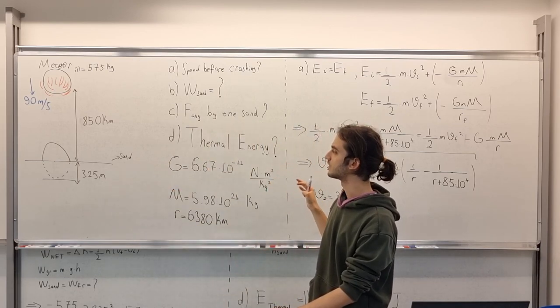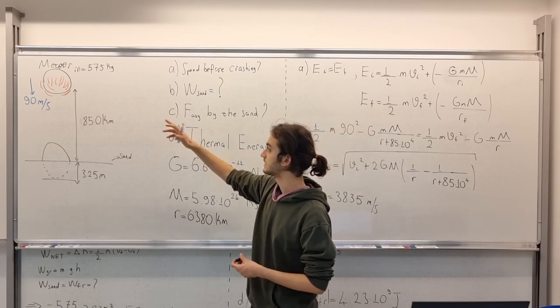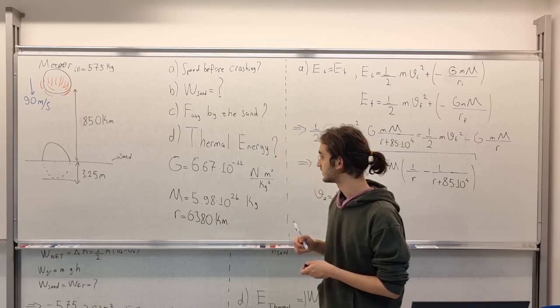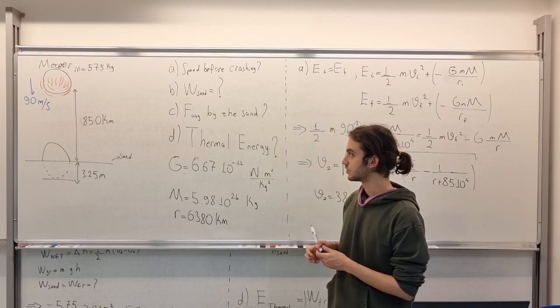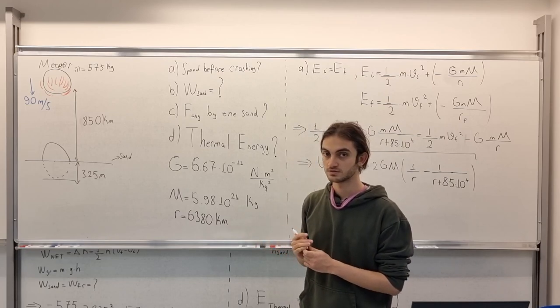In option C, we need to find the average force done on the meteor by the sand. And the thermal energy in option D. If you want to solve the question by yourself, you may stop the video now.